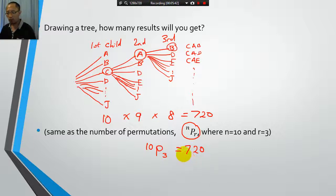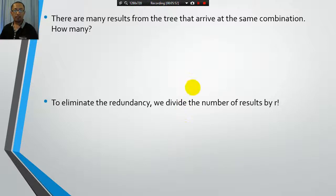However, this is for solving the problem as if it was a permutation problem. But we're dealing with combinations. So therefore, there are a lot of results from the tree that arrive at the same combination. So for example, let's say we have ABC. Okay, we got this result from the tree. We could go down another branch in the tree, another pathway that'll give us ACB. Now these two are the same combination.